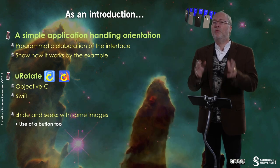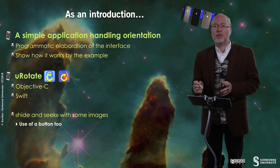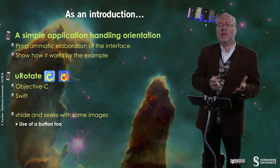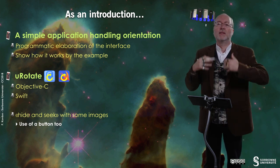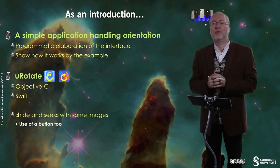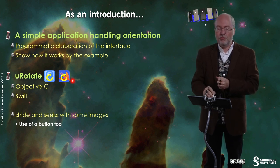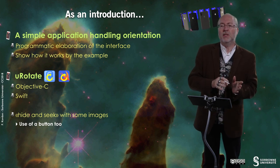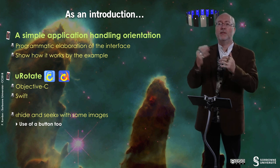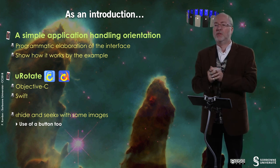Hello everybody! In this video, we will have a close look at the example U Rotate. U for universal, because it's an example that deals with various sizes of screens, and Rotate because it handles also several orientations. We will deal with a simple application handling orientation in the programmatic way, elaborating the interface programmatically. The idea is to have an implementation shown in Objective-C and also in Swift.